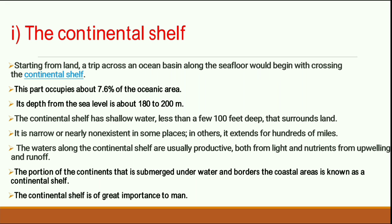Starting from the land, a trip across the ocean basin begins with crossing the continental shelf. When you visit beaches or coastal lines, after a specific distance the water starts and you can still walk — that submerged portion of the continent is called the continental shelf. It occupies about 7.6% of the oceanic area, and its depth is about 180 to 200 meters — very shallow.